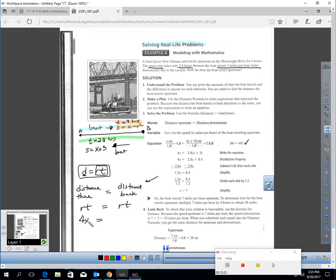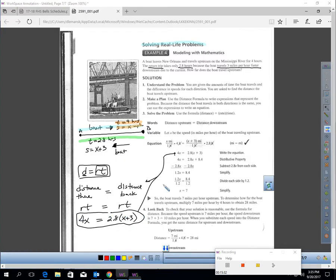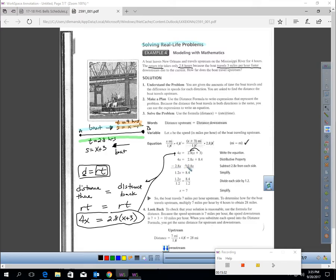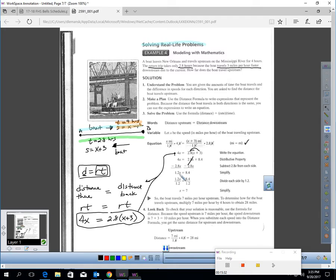If you get to here, you can see I'm matching what the book has. All you have to do is simplify first, distribute. You can see that here. Get all the variables on one side, which you can see the book's doing here. We're taking away 2.8X. So, 1.2X equals 8.4. Divide by 1.2 and there's your answer.